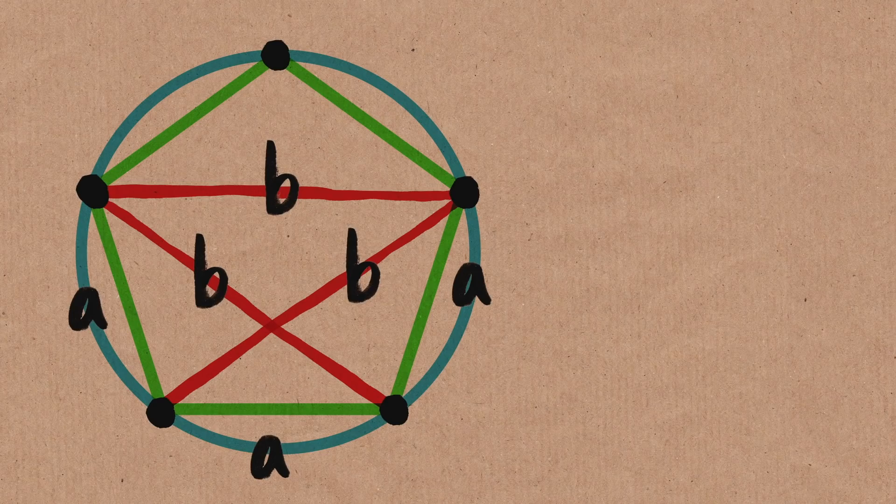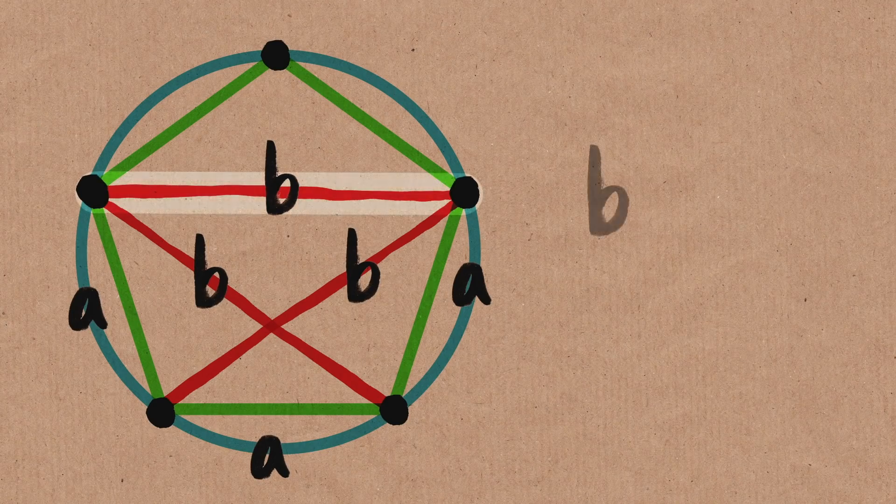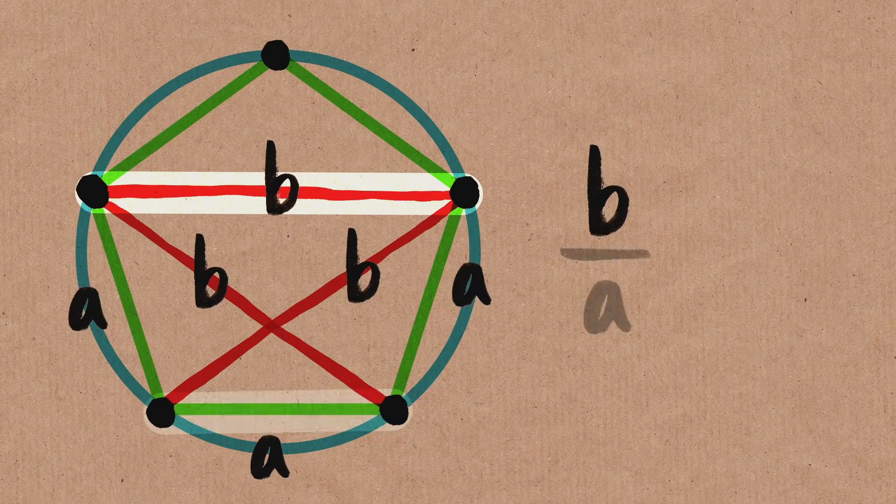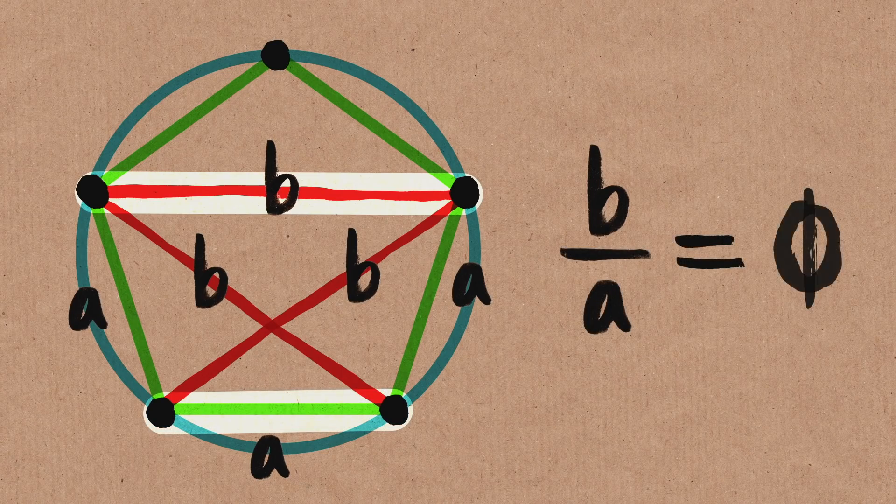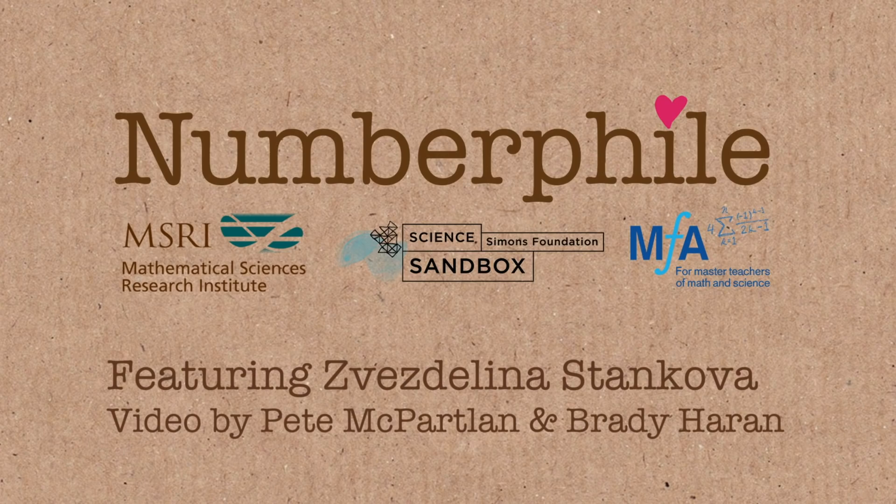So, what we have shown, using Ptolemy's theorem, is that if you take any diagonal of a regular pentagon, and you divide it by any one of its sides, you're going to get the golden ratio. I think our journey was worth it.